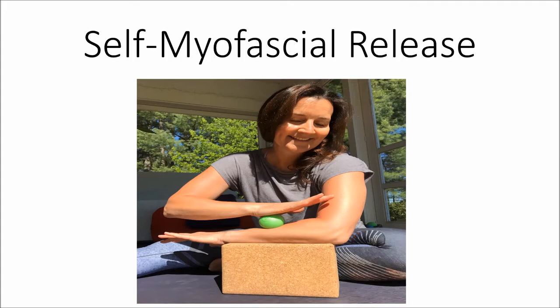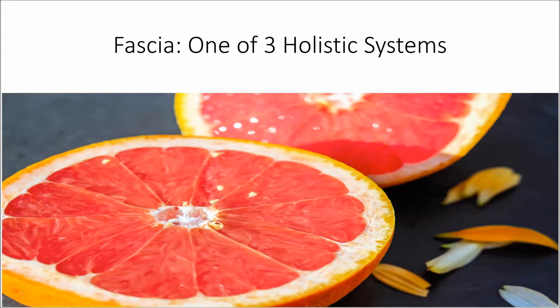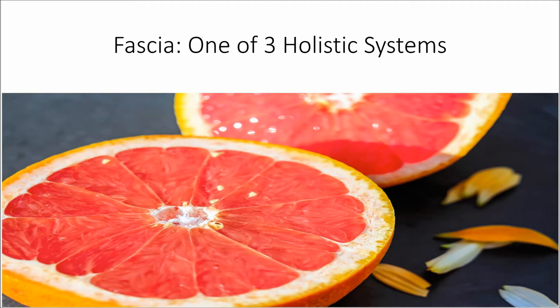Your body has three holistic systems that go into every nook and cranny of your body. If you were able to isolate each and display them three-dimensionally, they would look just like the body they came from. You're seeing an image of an orange or grapefruit and all the white stuff under the skin — that's fascia. The white fabric gets thinner and separates the orange into its sections, and those pulpy pieces are contained in smaller bags within each section.